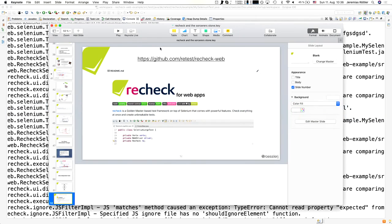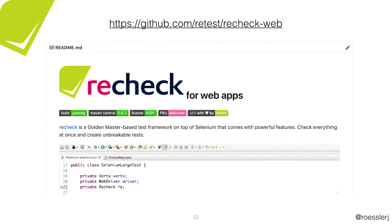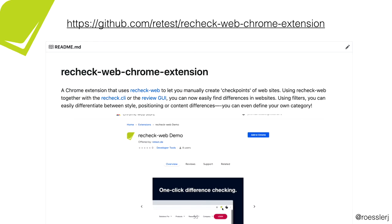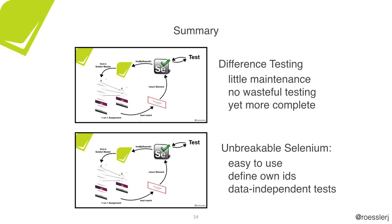ReCheck is open source — as is the Chrome extension I showed you. Where we make money is the services behind the Chrome extension and the GUI. There's a command line interface that is free, and the GUI is what we make money with. That was essentially the talk. Are there any questions?